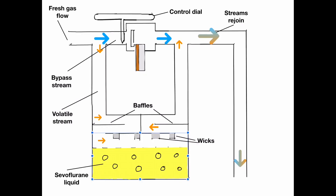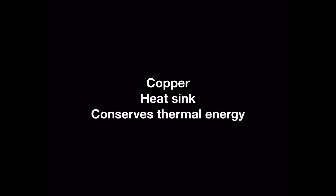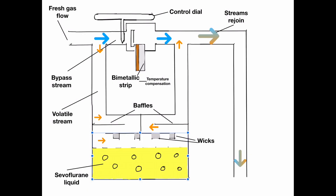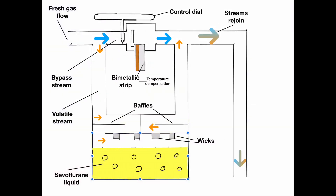To combat this, the vaporizer needs to have methods of temperature compensation. Modern vaporizers are made of copper, which is a good heat conductor and, because of its high mass, it acts as a heatsink to keep the thermal energy within the system. The other mechanism present is the bimetallic strip. This is a strip of two metals which expand at different rates as they are heated, usually made of steel and copper. The different expansions force the bimetallic strip to bend one way if heated or the other if cooled. This principle can be utilized to increase or reduce the amount to which the volatile stream is diluted by the bypass stream, and therefore the overall concentration of the volatile delivered.